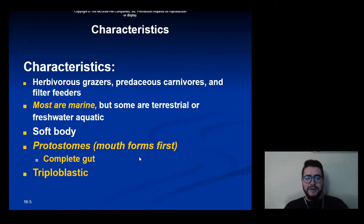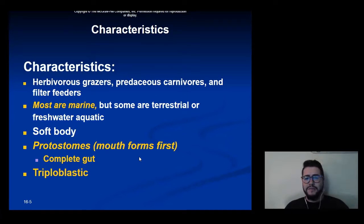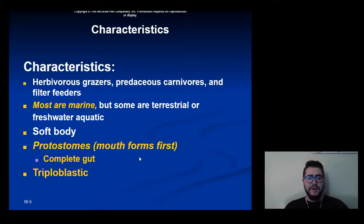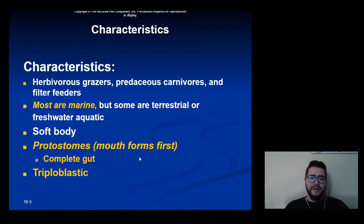Generally, we see almost every type of feeding mechanism. You have herbivores, which are like grazers. You have carnivores, which are predators, and you have filter feeders. But almost all are marine, except for a few terrestrial ones like snails and slugs, and there are a few freshwater aquatic animals as well.